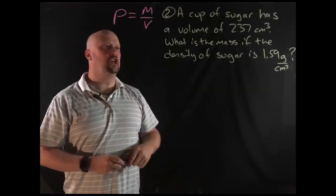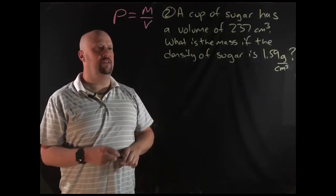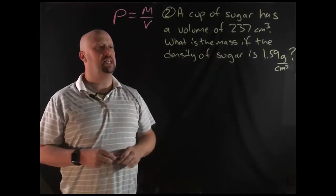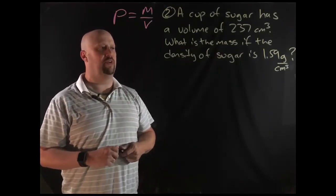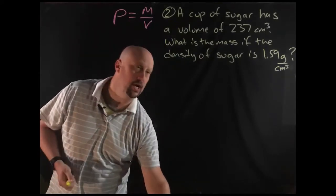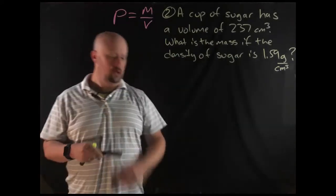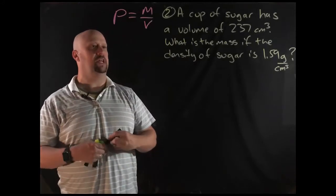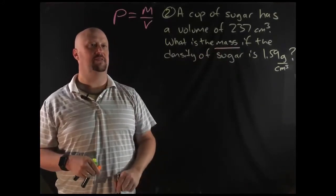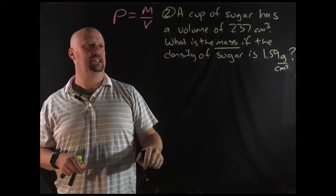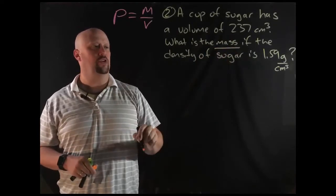So question two, a cup of sugar has a volume of 237 cubic centimeters. What's the mass if the density of sugar is 1.59 grams per cubic centimeter? You should immediately notice that something's a little bit different in this problem. What's a little bit different is that we're looking for the mass instead of the density. We're given the density, and we already know the volume.